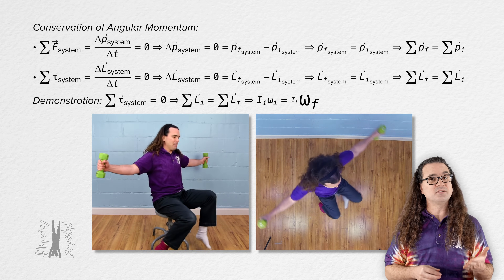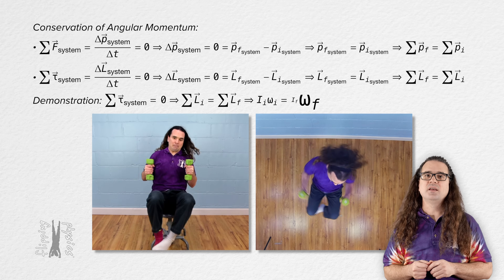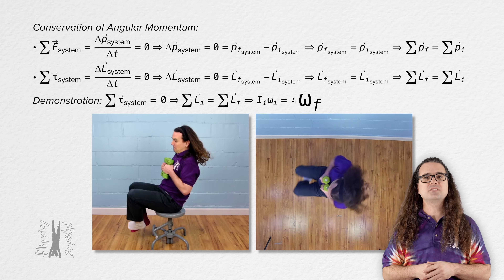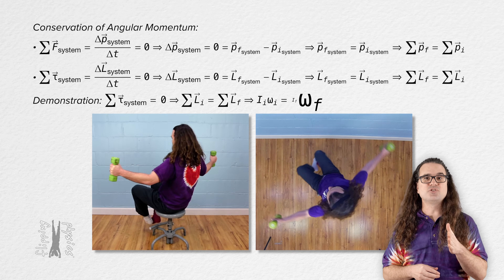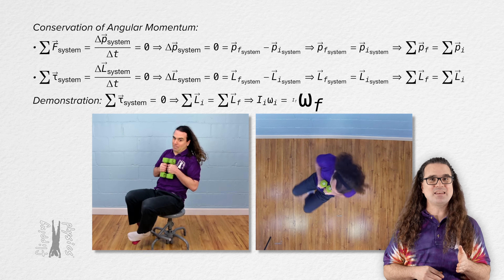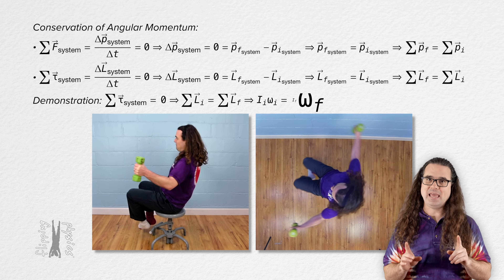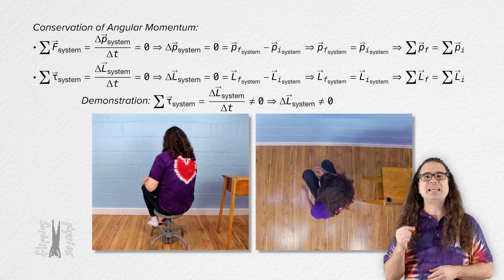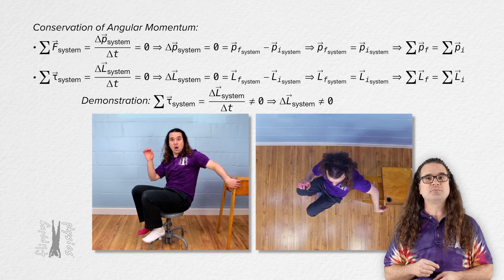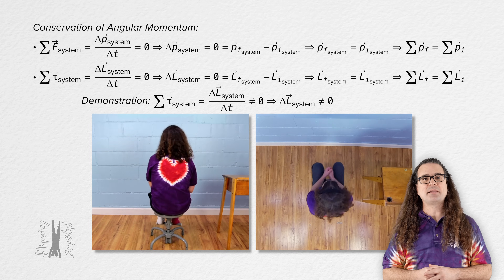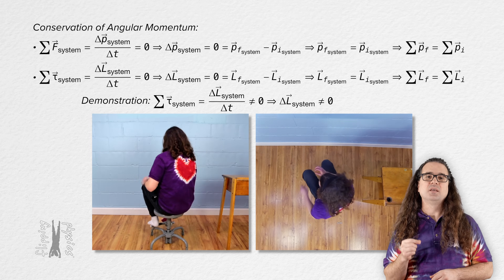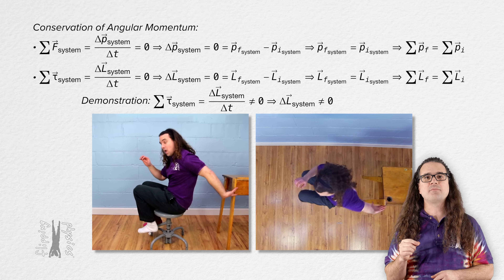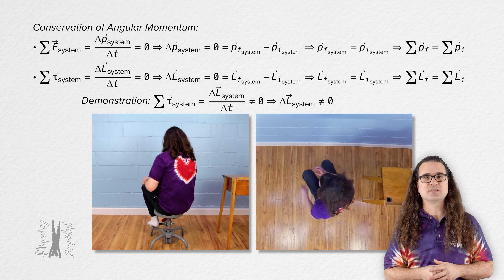The angular velocity of the system increases because there is no external torque — the angular momentum remains constant with no angular momentum being added or removed from the system. If instead I push off of something, I cause a non-zero torque on the system, and angular momentum does not remain the same because angular momentum has been added to the system. In other words, angular momentum is transferred between the system and the environment when there is a net torque acting on the system.